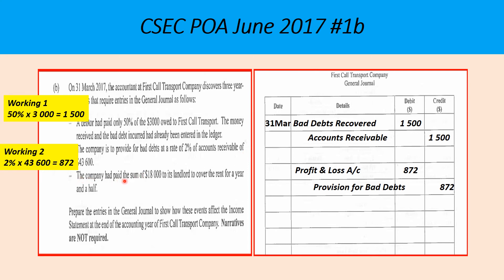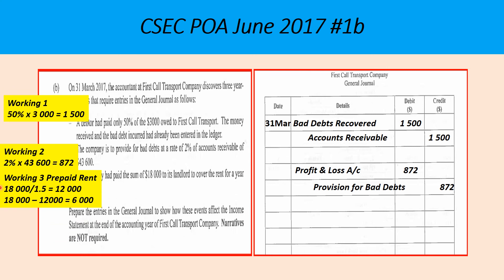The last item: the company had paid the sum of $18,000 to its landlord to cover the rent for a year and a half. That's prepaid rent — if it's a year and a half, it means a half year is prepaid. Working: $18,000 ÷ 1.5 = $12,000 per annum. Take $18,000 minus $12,000, we get $6,000 prepaid. We enter it in the books: debit prepaid rent $6,000, and take it out of rent expense $6,000.